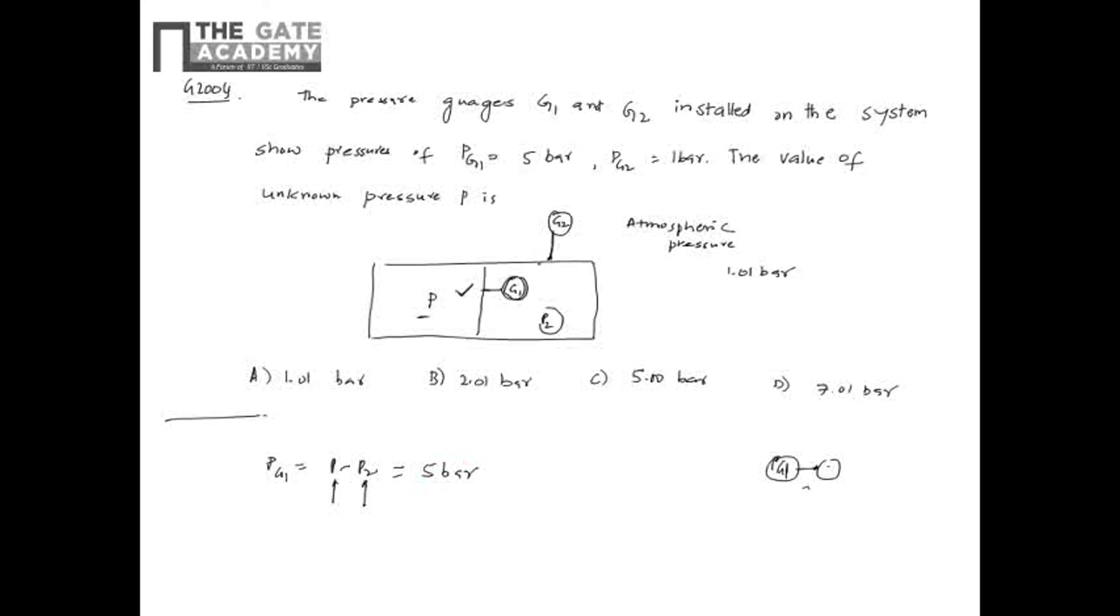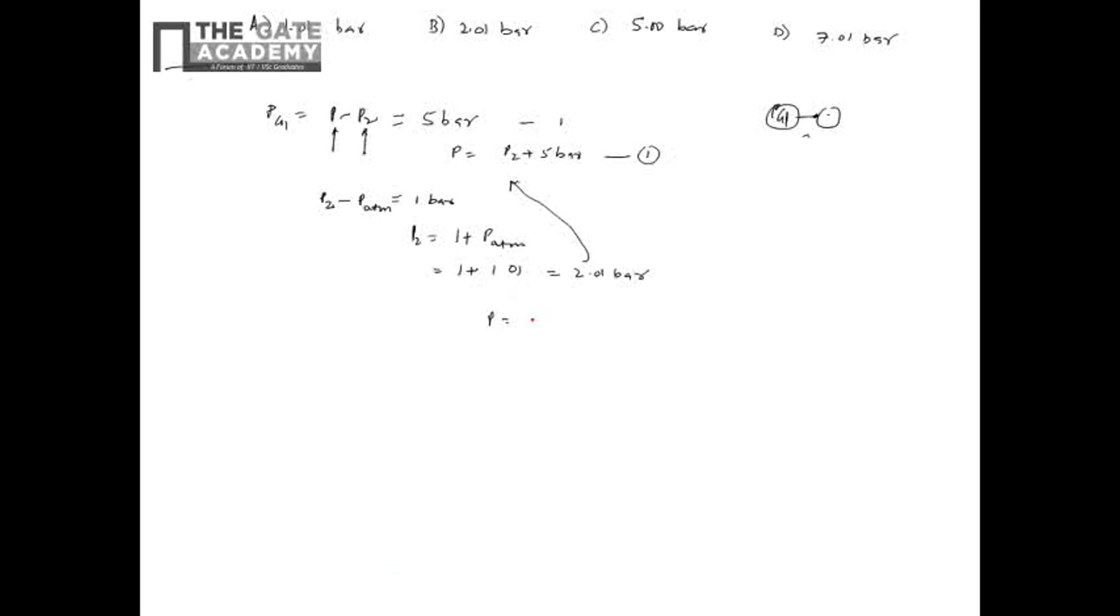Now this G2, the knob is inserted in this chamber so it will show P2 minus the ambient in which it is kept. It is kept in the atmosphere pressure, so P0, and that it is showing as 1 bar. So you have one equation where P is P2 plus 5 bar from the first equation and from here P2 is 1 plus P0. P0 is the atmosphere pressure and the value is 1.01, so this is 2.01 bar P2, and that if I substitute it here it becomes 2.01 plus 5. So it is 7.01 bar. Answer is D. So the only trick here is the gauge - whatever the gauge shows, it shows the pressure.